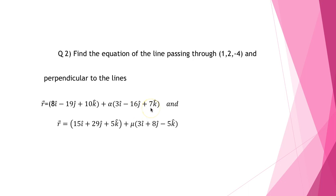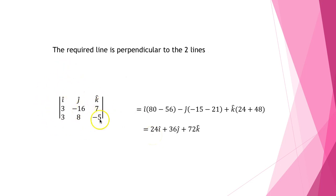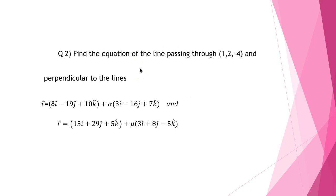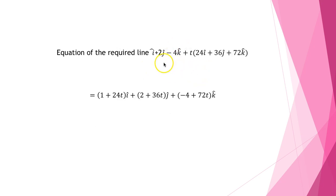We take the direction ratios of the two lines: (3, −16, 7) and (3, 8, −5), and compute their cross product using a 3×3 determinant. This gives i(80 − 56) − j(−15 − 21) + k(24 + 48) = 24i + 36j + 72k. The line passes through (1, 2, −4), so its equation is r = (i + 2j − 4k) + t(24i + 36j + 72k), which simplifies to (1 + 24t)i + (2 + 36t)j + (−4 + 72t)k.